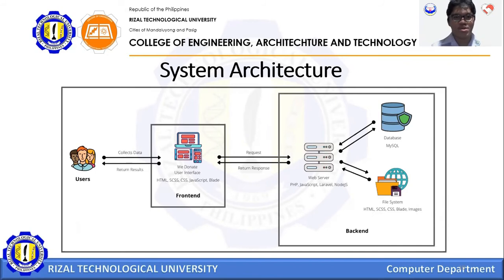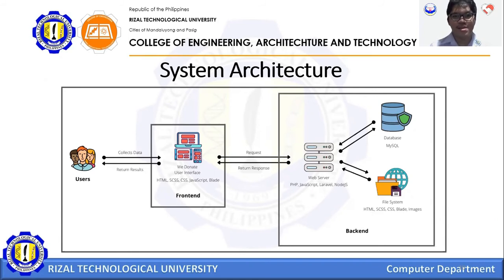System Architecture. The system architecture of our web application is rather simple. Since we are using the Laravel framework, we strictly follow the Model-View-Controller architecture. We have the users, the front end, and the back end. Our proposed web application, We Donate, collects data from users using its user interface. Depending on what the user wants, specific requests are sent to the web server, which is responsible for data processing and management. Depending on the request, it can manipulate data within the database or save files within the file system.